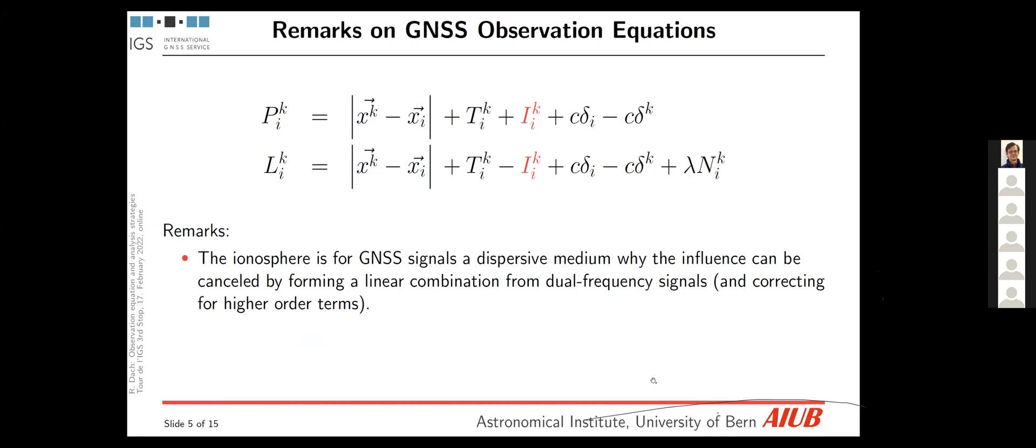So last but not least, we have then also the atmosphere. First, the upper part, the ionosphere. Here, we are lucky. The microwave signals from the GNSS are dispersive here. So it means the effect is frequency dependent. If you have dual frequency signals, we can cancel this effect out by adding some corrections. So from this, we assume for tonight that we don't need further effort for the ionosphere. But for the troposphere, we need a proper modeling. And this will be the last presentation of tonight, given by Johannes Buhl.